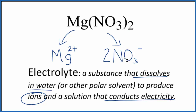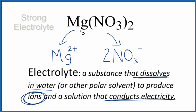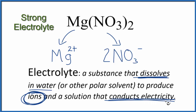So we have our substance — it's soluble, it dissolves in water, then it produces ions: the magnesium ion and 2 nitrate ions — and therefore the solution conducts electricity. So in answer to our question, Mg(NO₃)₂, magnesium nitrate, is an electrolyte. In fact, it's a strong electrolyte because it dissolves completely into these ions, and the resulting solution will conduct electricity quite well.